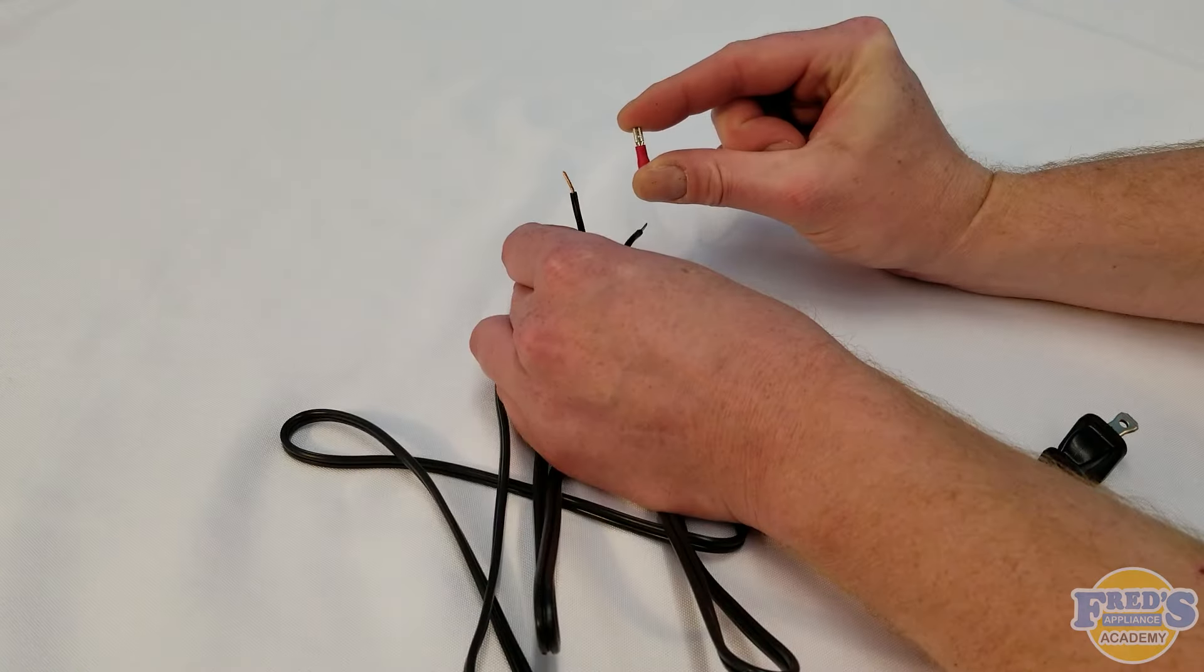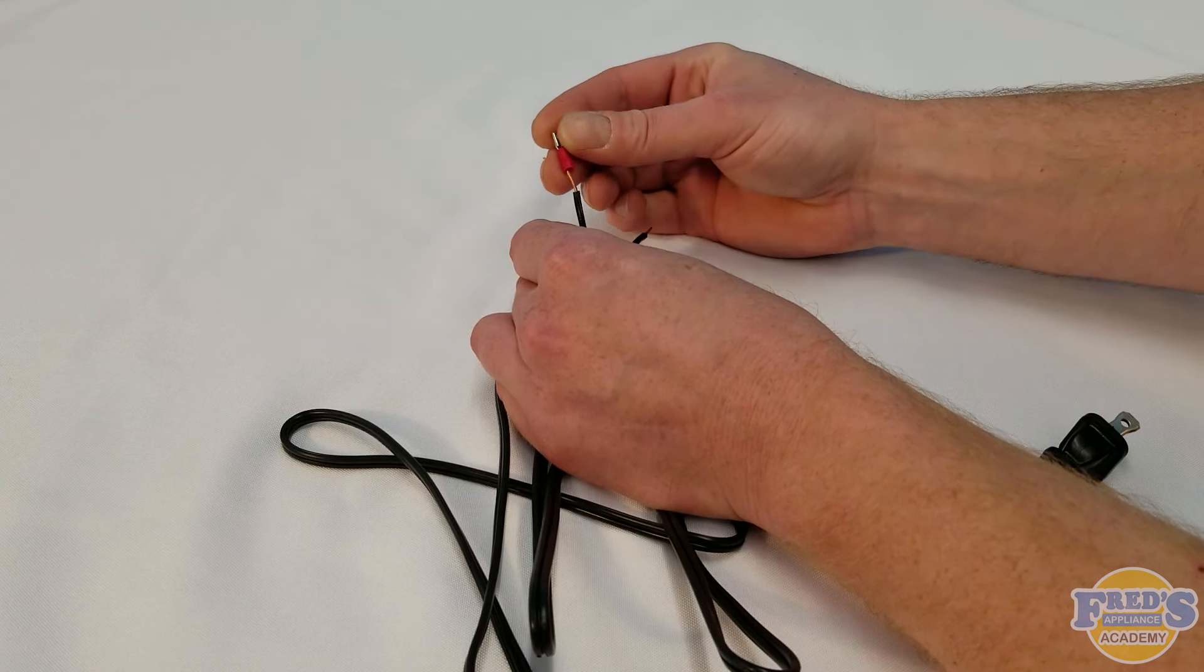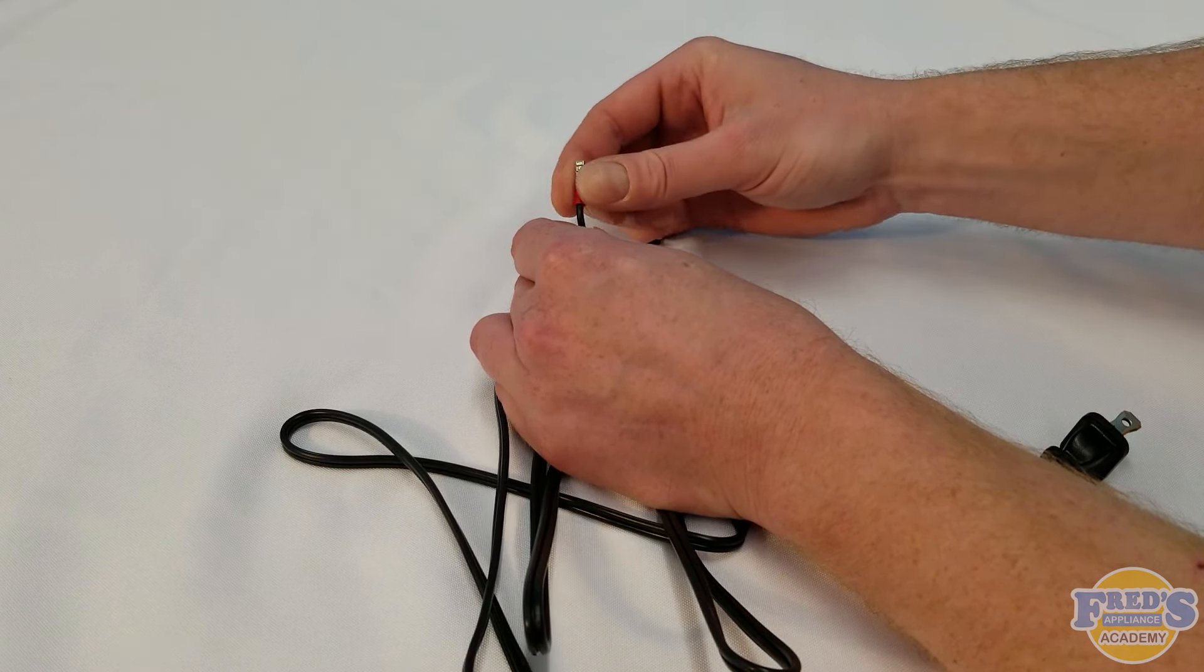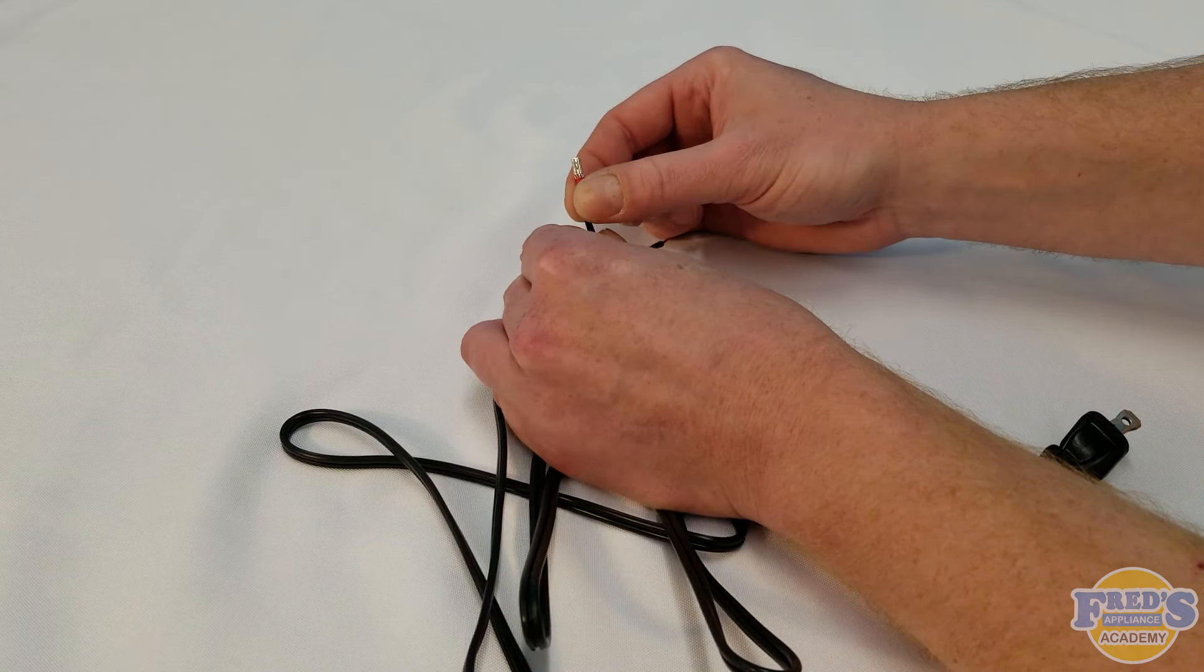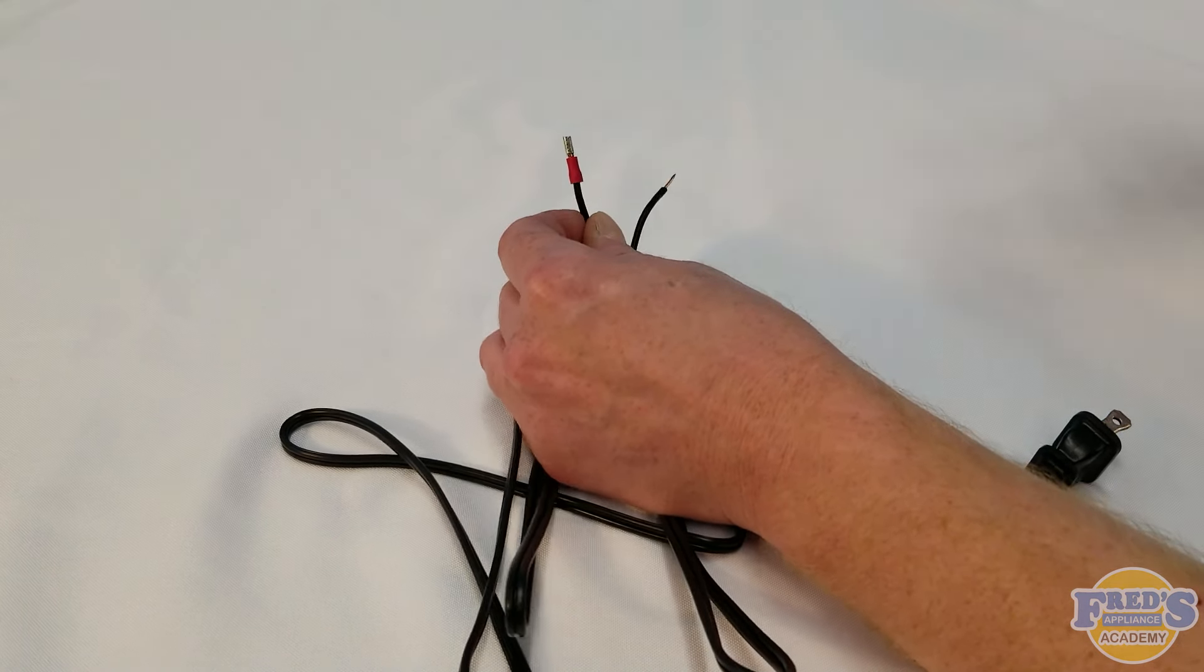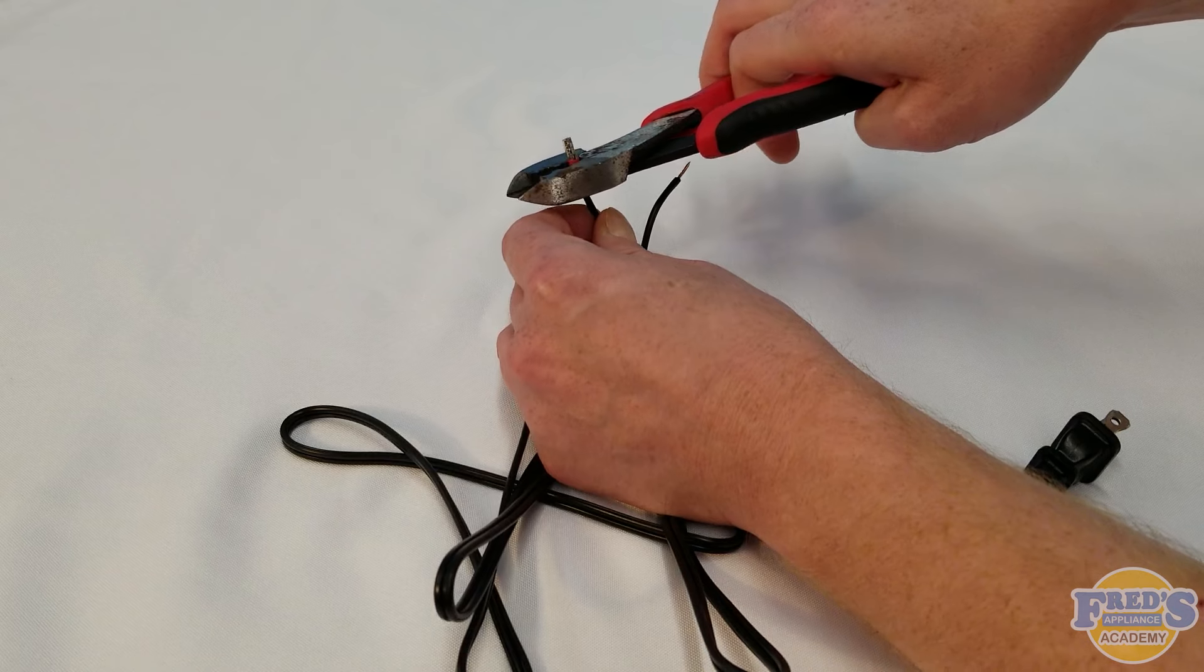Next we're going to crimp on our connectors. These connectors we're using are 2.8 by 0.5 millimeter and can commonly be found online, usually bought in packs of around 50 to 100.